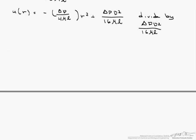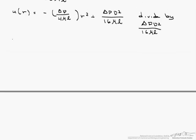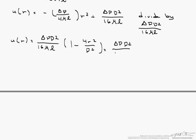If we divide this through, then we get u of r equals delta P d squared divided by 16 times mu times l, times 1 minus 4 r squared over d squared. Or we can write this as delta P d squared over 16 mu times l, times 1 minus 2 r over d squared.